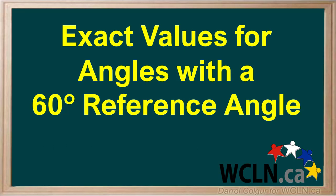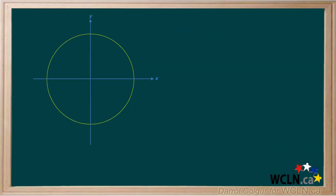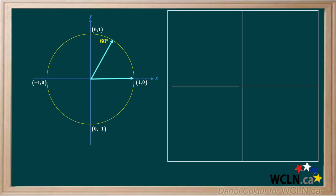We can get exact values of sine, cosine, and tangent for some special angles in standard position. Here we'll look at four angles that have a reference angle of 60 degrees. We'll start with the x and y axis and a circle, putting in the coordinates for the points where the circle and the axis intersect. We'll add an arrow showing the initial side at 0 degrees, add a mark at 60 degrees, draw in a terminal arm, and label the principal angle as 60 degrees. We'll construct a table to record exact values for the four special angles we'll look at here.